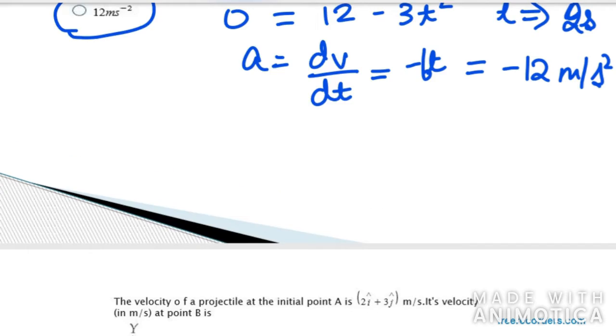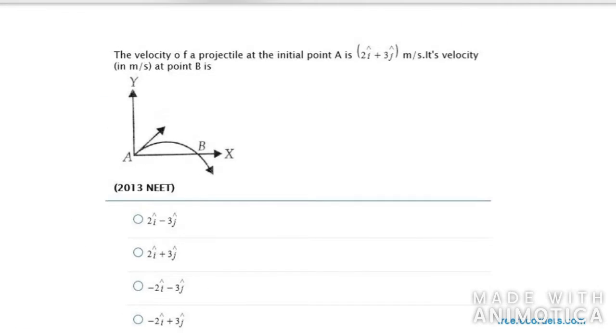Let's move on to the next one. In this case it says the velocity of a projectile at the initial point A is 2i cap plus 3j cap meter per second. Its velocity in meter per second at point B is...